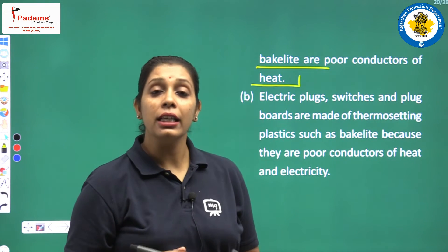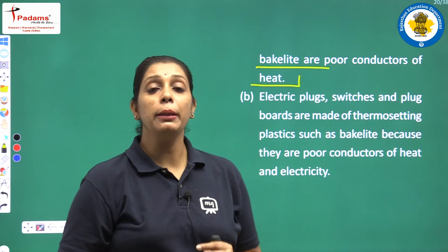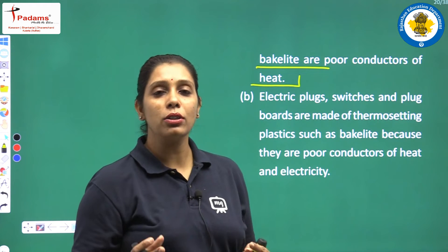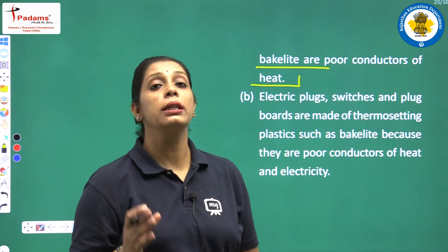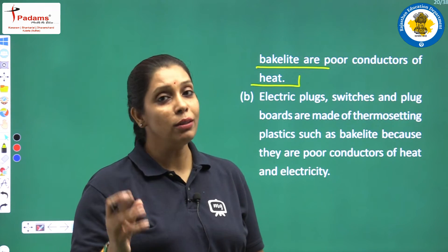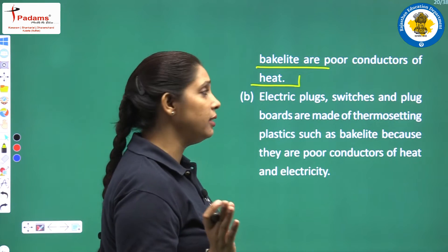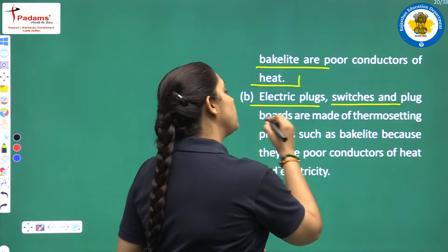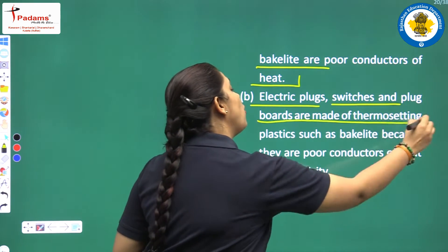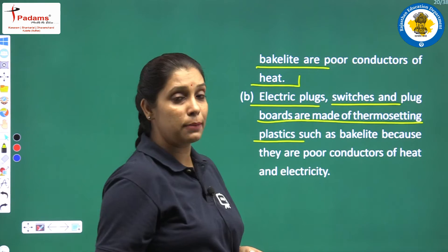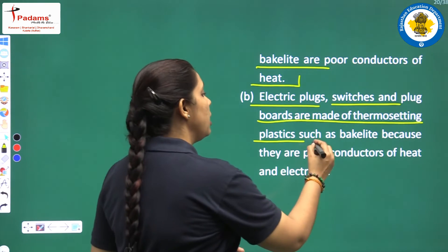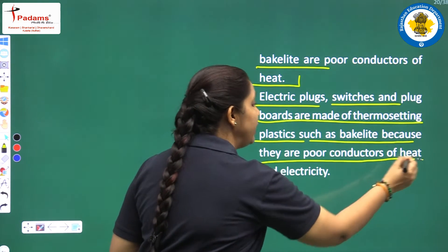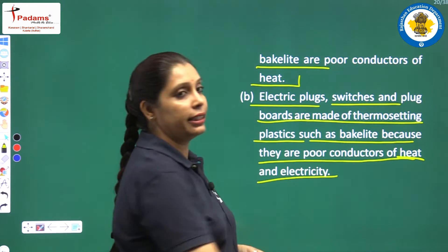The next part is: why we make switches, plugs, switchboards, or plug boots of thermosetting plastic. Electric plugs, switches, and plug boots are made of thermosetting plastics such as bakelite just because they are poor conductors of heat and electricity.